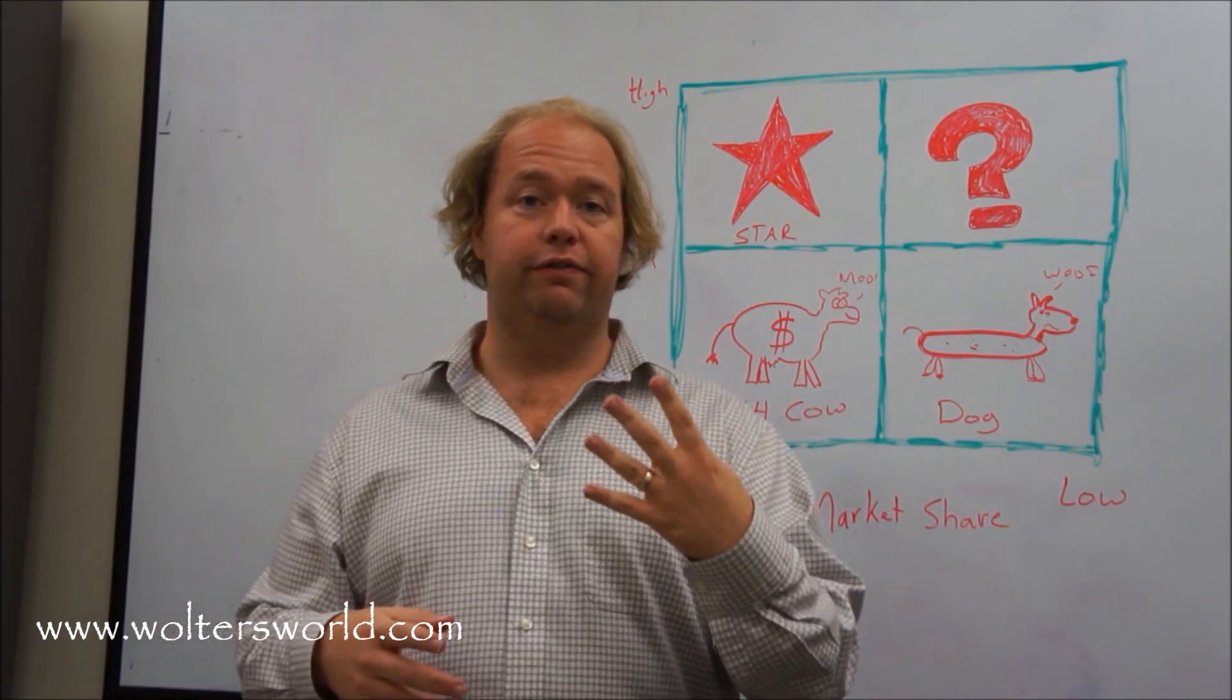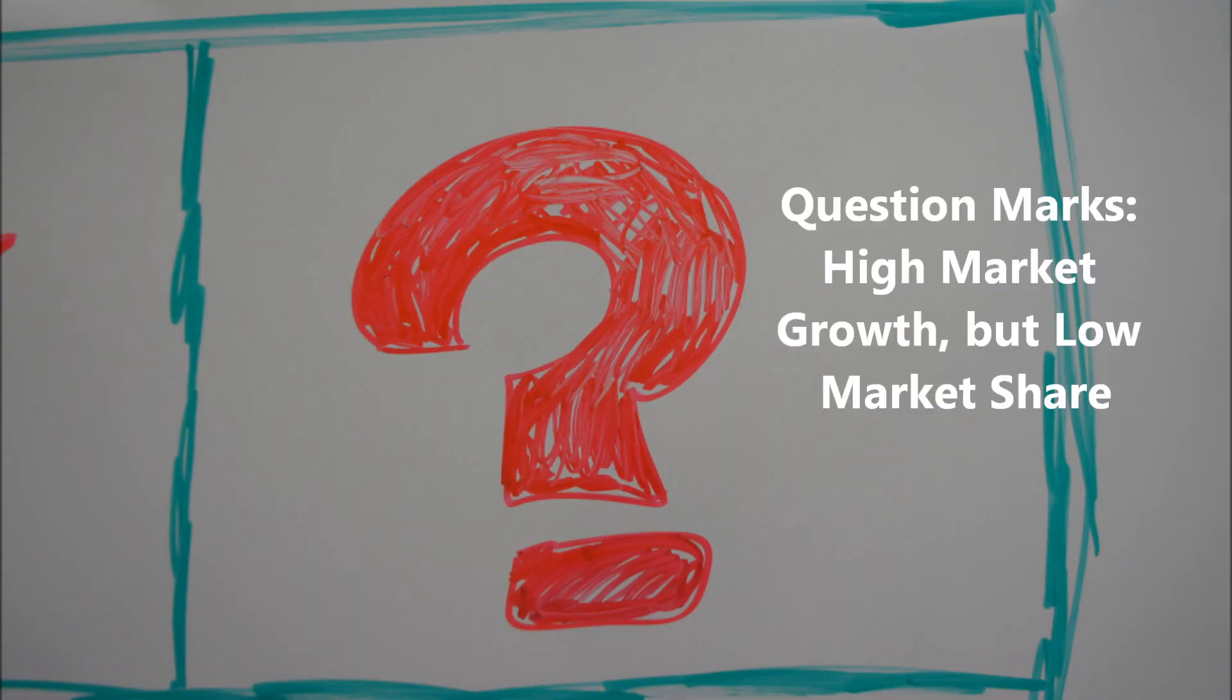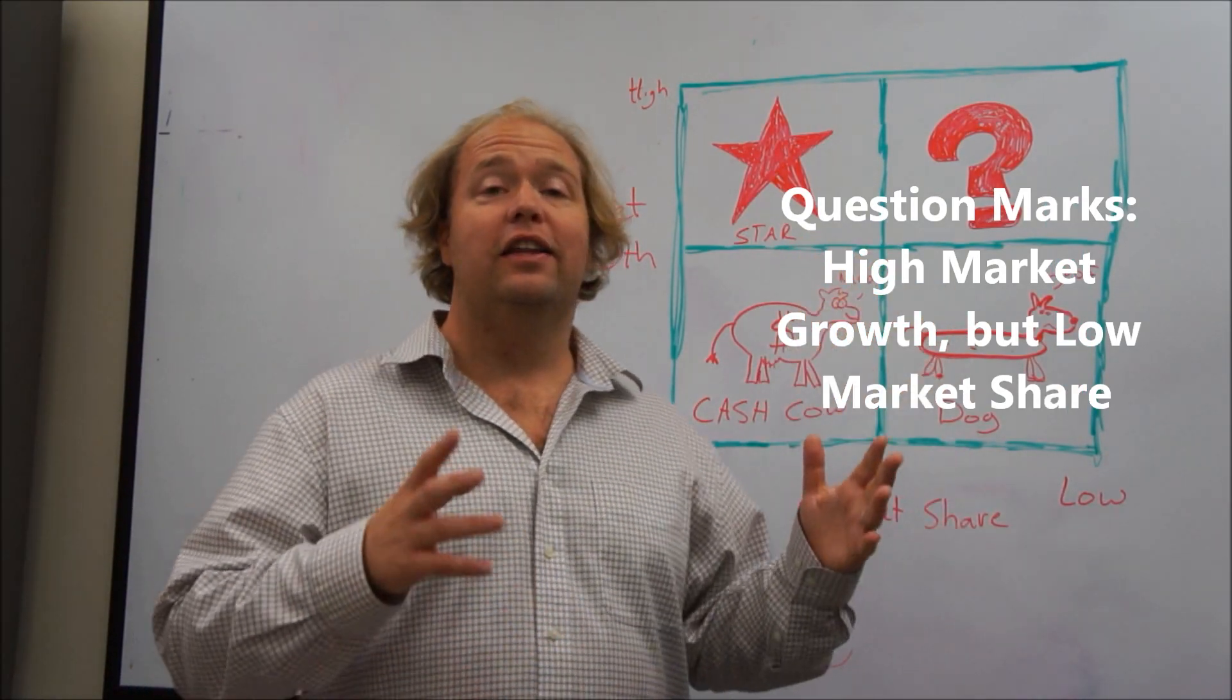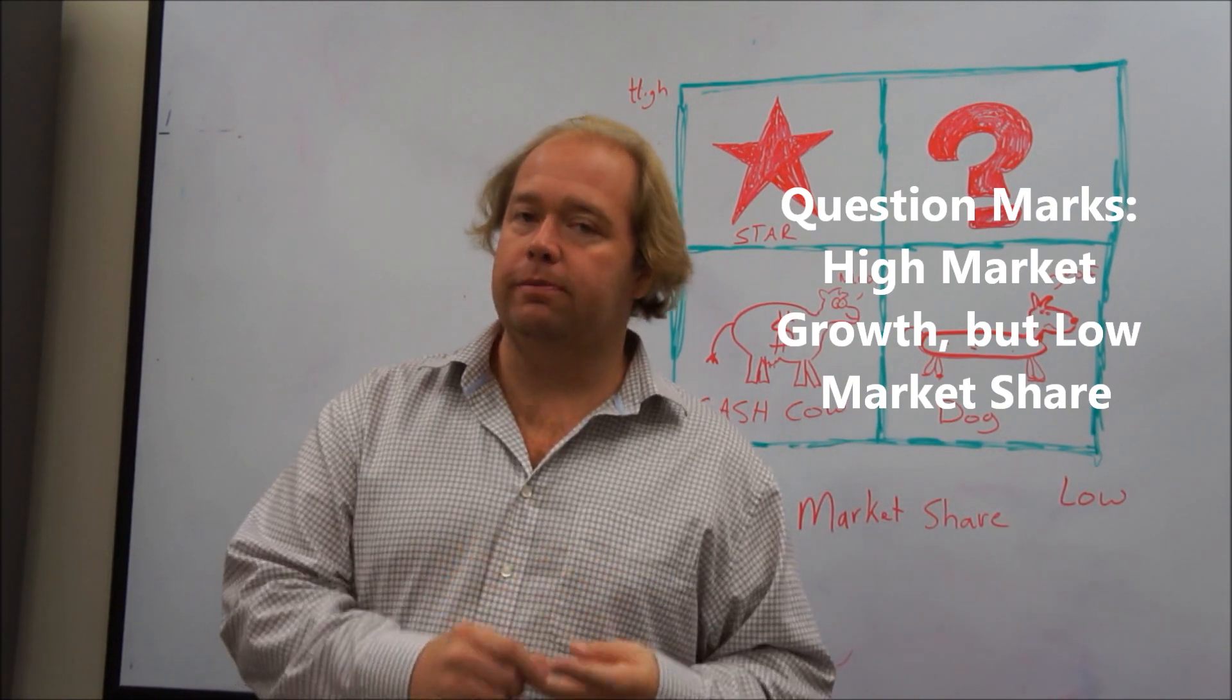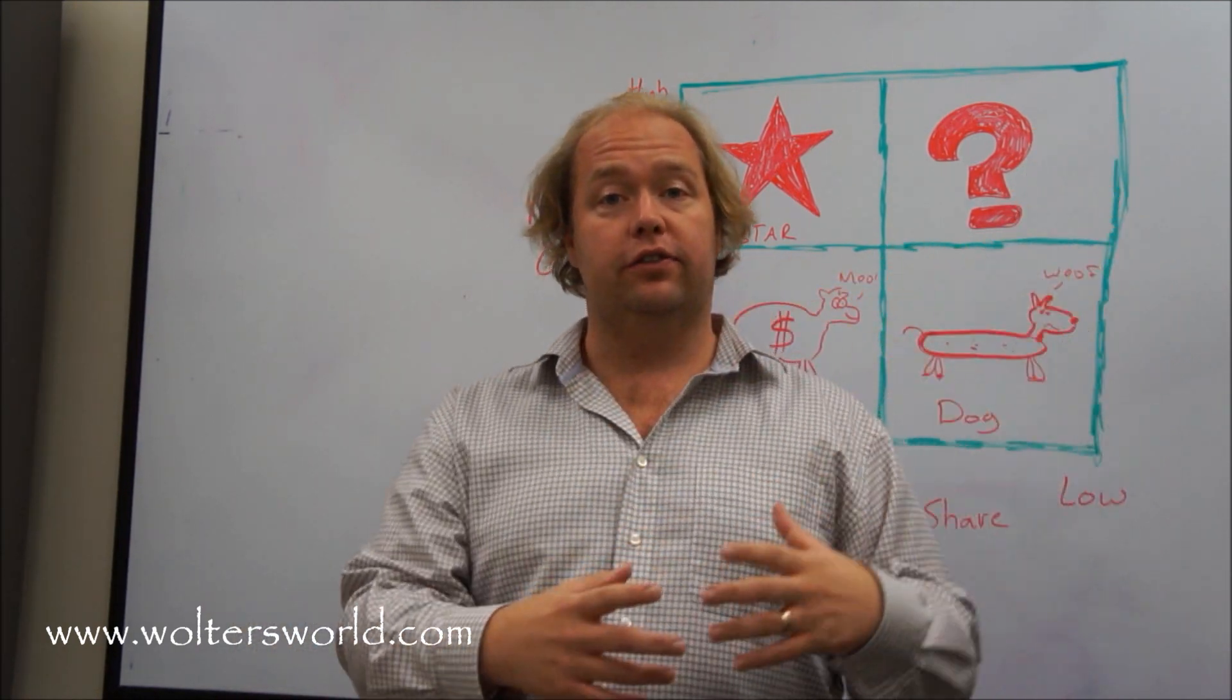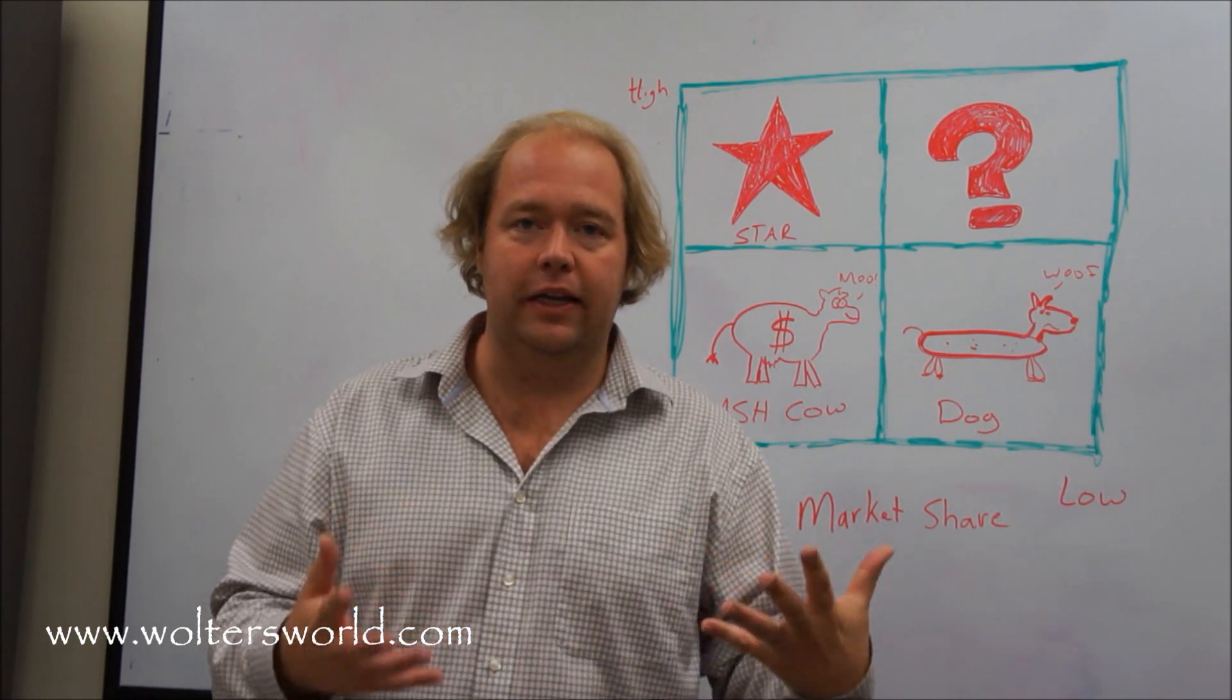And so that's what we have here. Now, if we look at it, we have four different quadrants, and we're going to start up here with the question marks. Now, question mark products, these are products or services that are in high growth industry, but we are a very small player in it. So we don't know, is it going to take off, we can become somebody big, because there's so much room to grow, or could it turn out that we're not going to make anything for it?